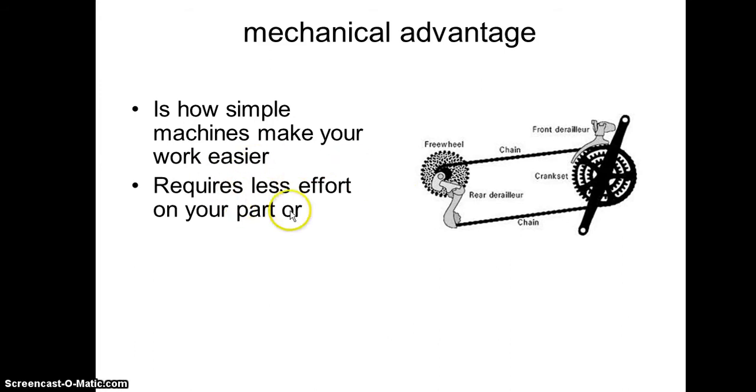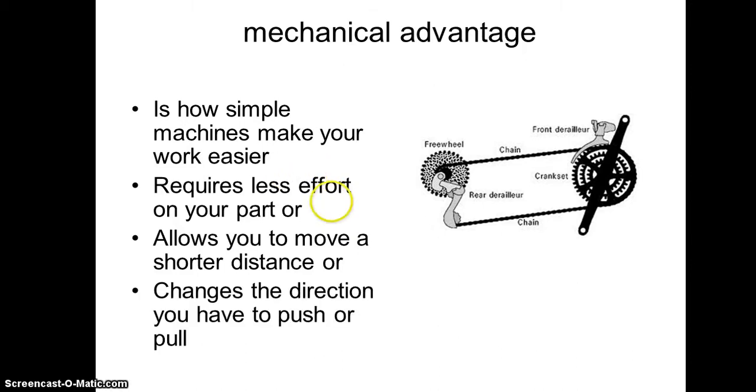So it makes it easier either because you get to use less effort, as with the bicycle gear, or you get to move a shorter distance. There are some simple machines that allow you to almost take a shortcut, or sometimes they allow you to change the direction that the effort is moving.